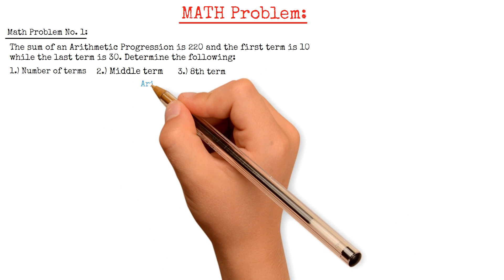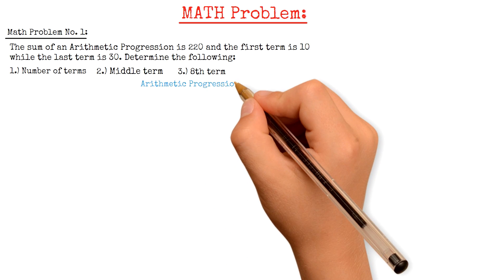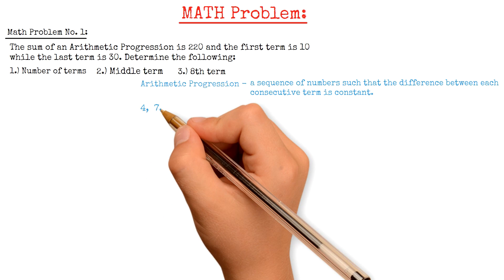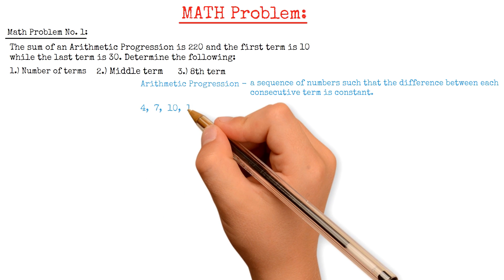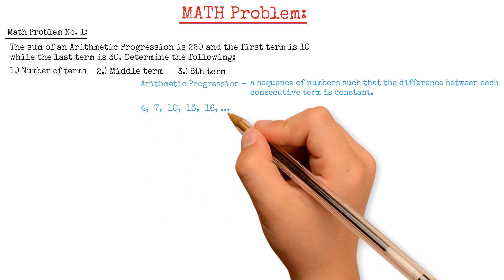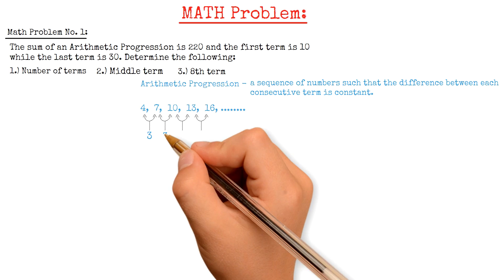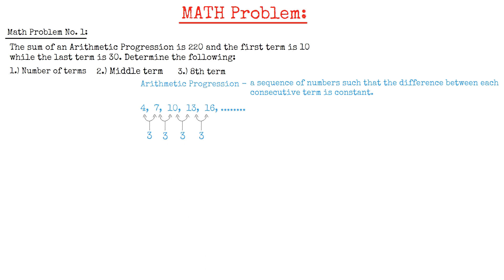The problem involves arithmetic progression. Arithmetic progression by definition is a sequence of numbers such that the difference between each consecutive term is constant. For example, 4, 7, 10, 13, 16, and so on. We notice that the difference between each consecutive term is 3, which is constant.